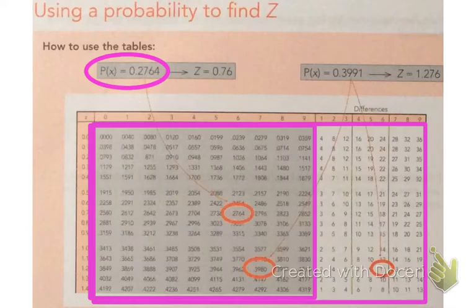And we're going to look to see if we can find a value 0.2764. And we're quite lucky in this one in that we find the exact value we want there of 0.2764.